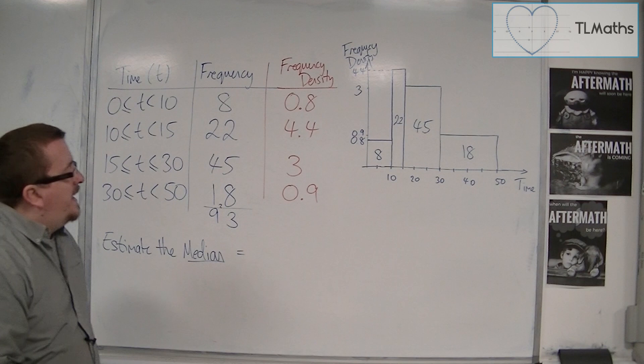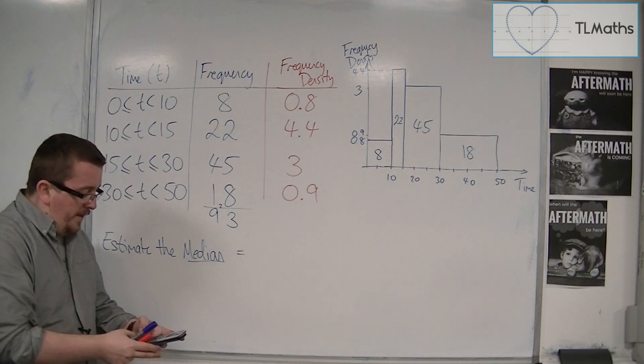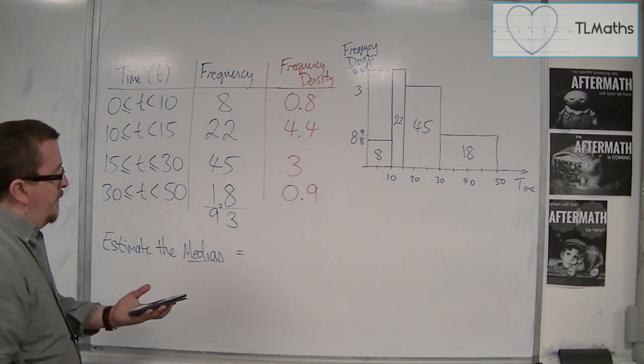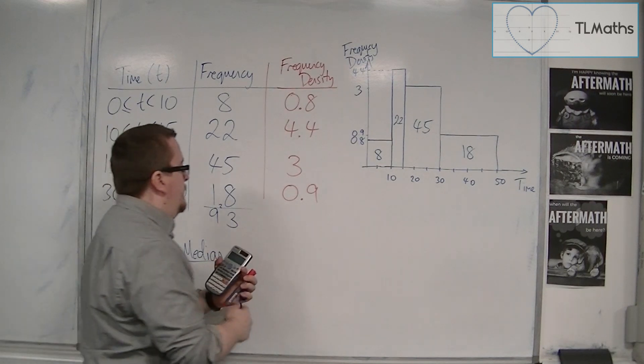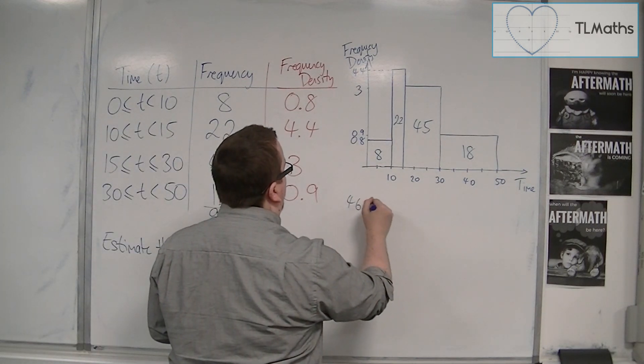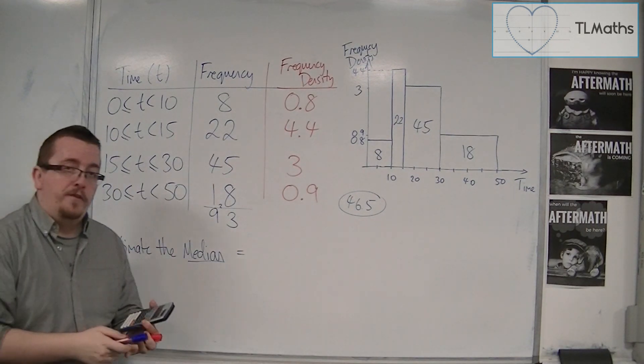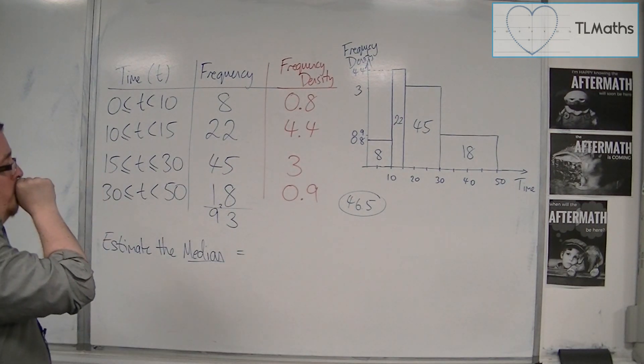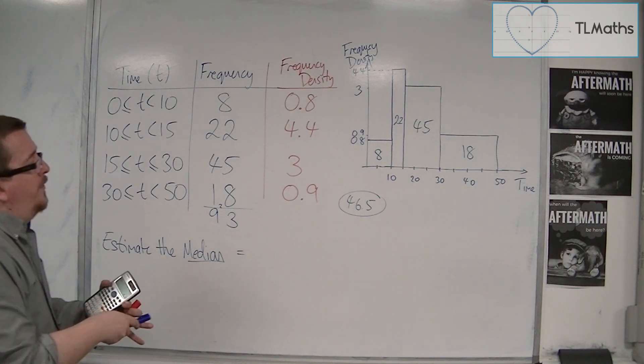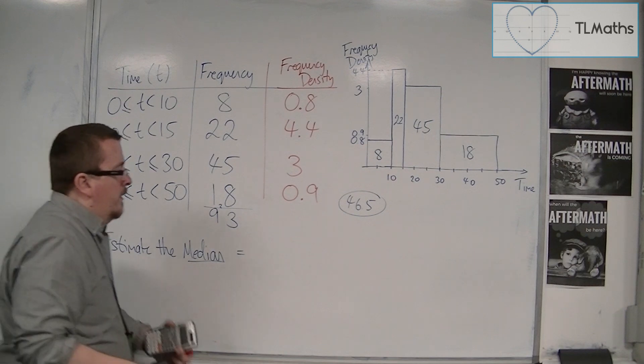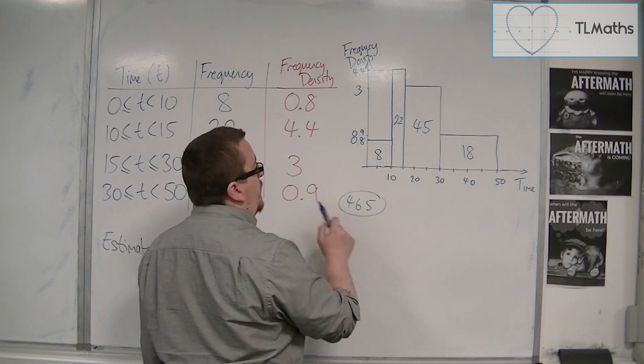So we're going to keep with the 93. And we're going to go halfway. So halfway of the 93. And we're going to go for the 46.5th bit of data. So 46.5. Is my halfway through for the median. So. How you want to look at this. Is.